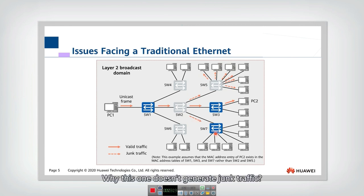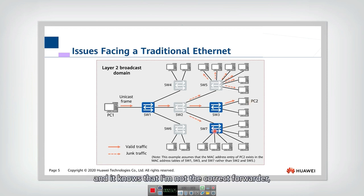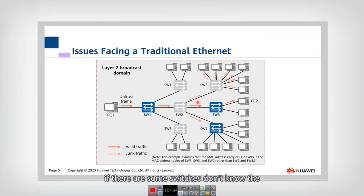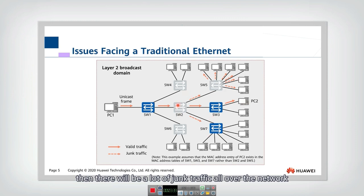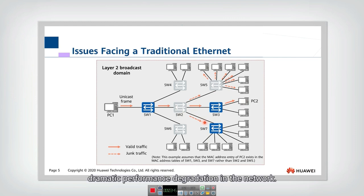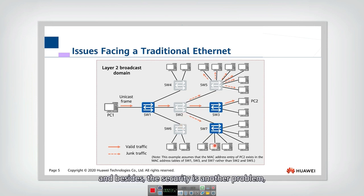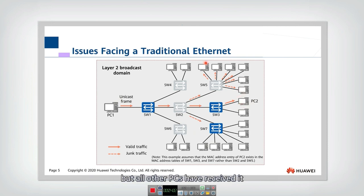A switch that does have the MAC address in its table knows it is not the correct forwarder and simply discards. However, if some switches don't know the interface of the destination, there will be a lot of junk traffic all over the network. This junk traffic causes dramatic performance degradation and can sometimes fail the whole network. Besides, security is another problem — the packet is only destined to one destination, but all other PCs receive it, generating severe security problems.